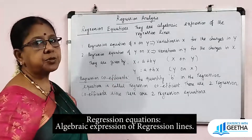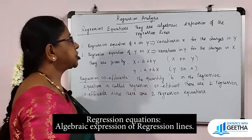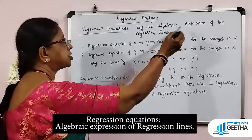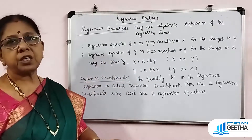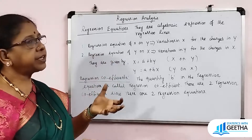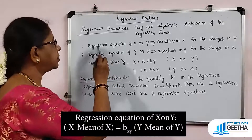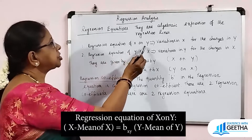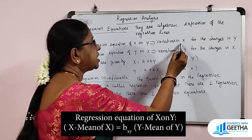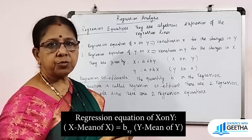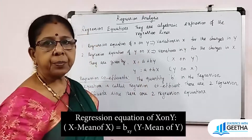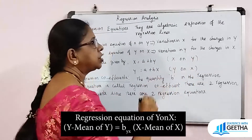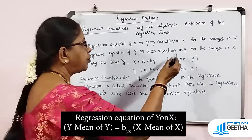Now, what are regression equations? They are the algebraic expression of the regression lines. There will be two regression equations: one is the regression equation of x on y, and one is the regression equation of y on x. The regression equation of x on y gives the variations in the value of x for the changes in y. The regression equation of y on x gives the variance in y for the changes in x.